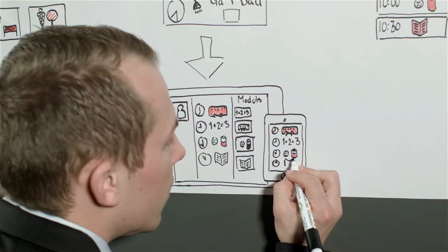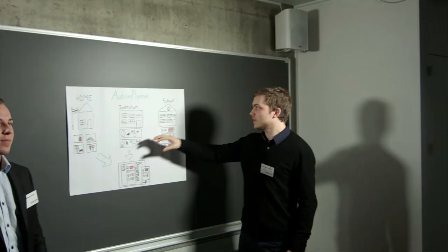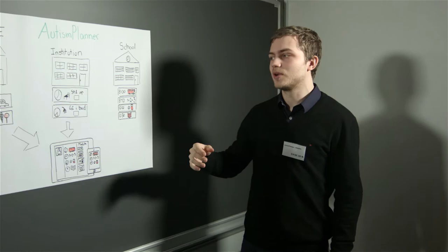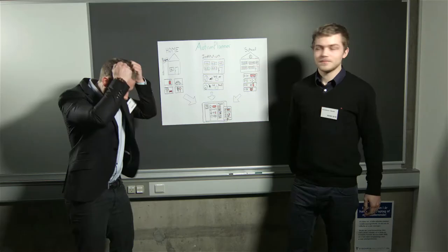Plans can be adapted on the go, making life easier for both parents, caregivers and children. The Autism Planner team is working directly with autism schools and institutions on their prototype. Any winnings will go directly to creating the final product.